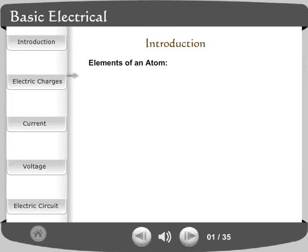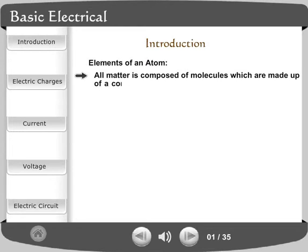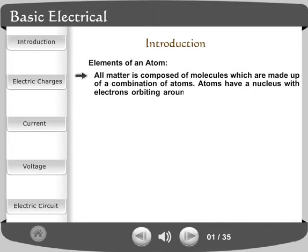Elements of an atom. All matter is composed of molecules which are made up of a combination of atoms. Atoms have a nucleus with electrons orbiting around it. The nucleus is composed of protons and neutrons.